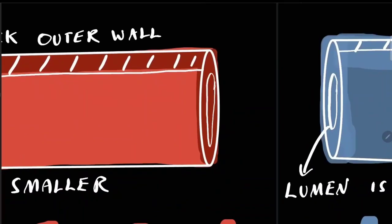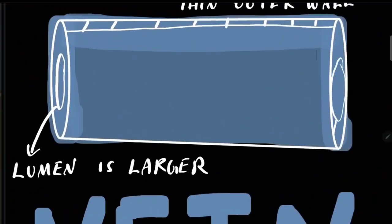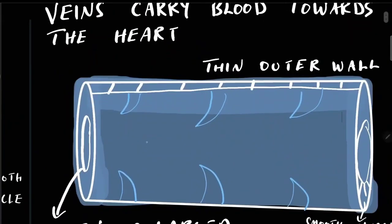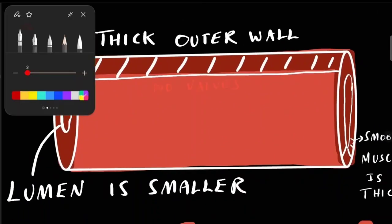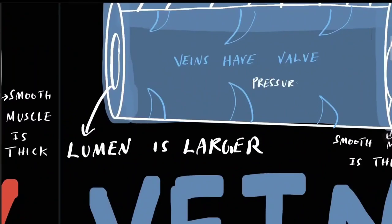In arteries, the middle layer is made up of smooth muscles which is thicker, whereas in veins the smooth muscle is thinner. Veins also have valves which prevent the backflow of blood, whereas arteries don't have any valves. Blood pressure in arteries is greater as compared to veins.